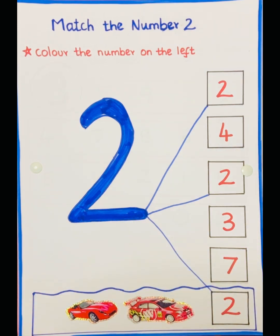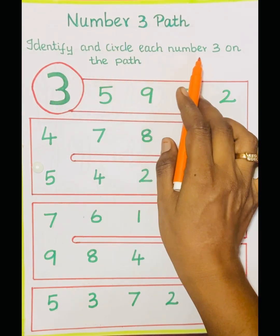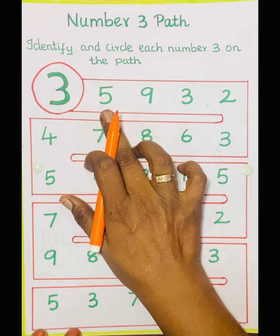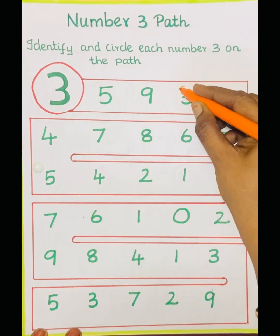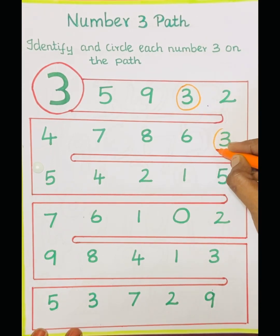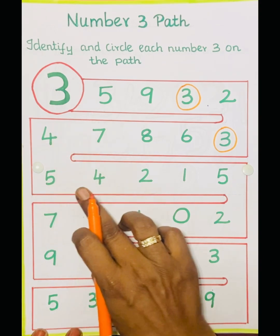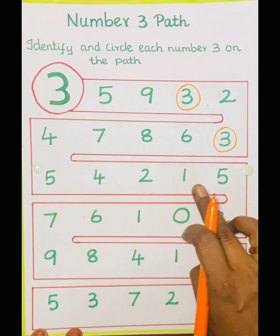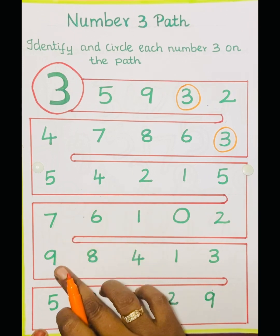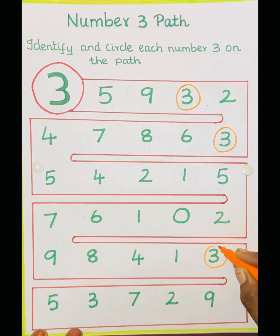Number 2, number 3 path — identify and circle each number 3 on the path. See the number 3, so we have to circle the number 3. This is 5, 9, 3 — so you have to circle it. 2, 3, 6, 8, 7, 4, 5, 4, 2, 1, 5, 2, 0, 1, 6, 7, 9, 8, 4, 1, 3, 9.